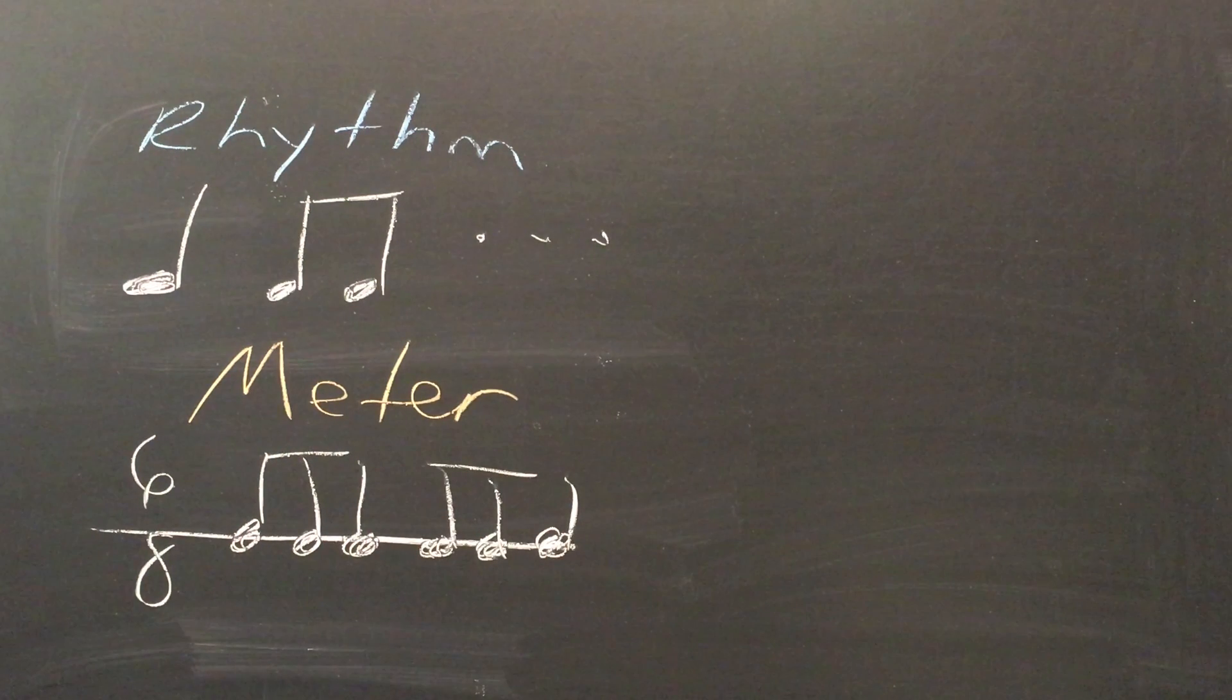In notated western music, meter is expressed as a ratio of the number of beats to each measure over the unit value of each beat. For example, in 6-8 time, each measure has 6 eighth notes.